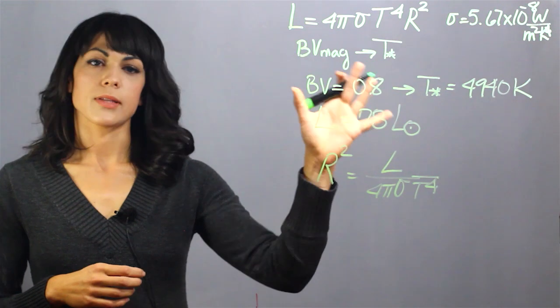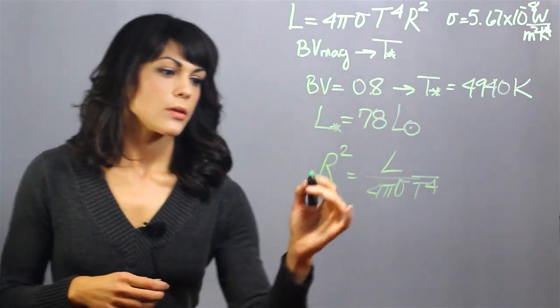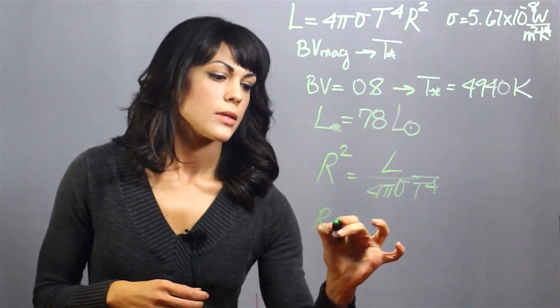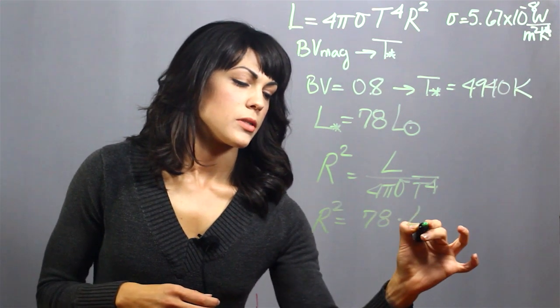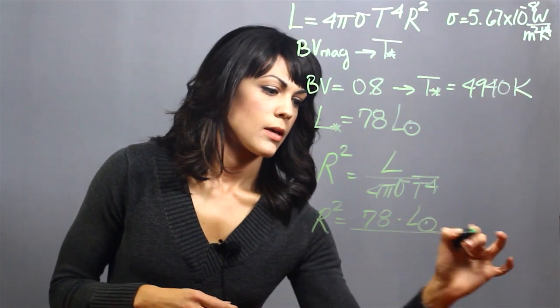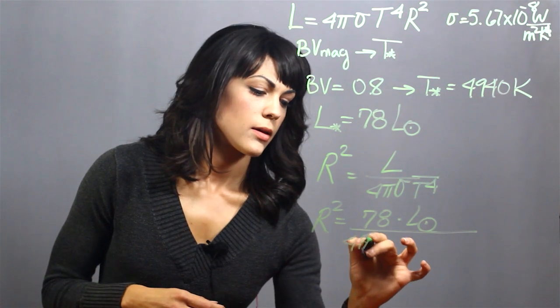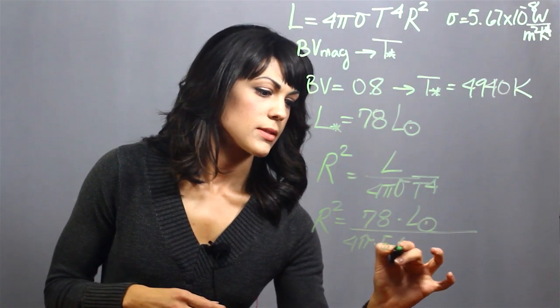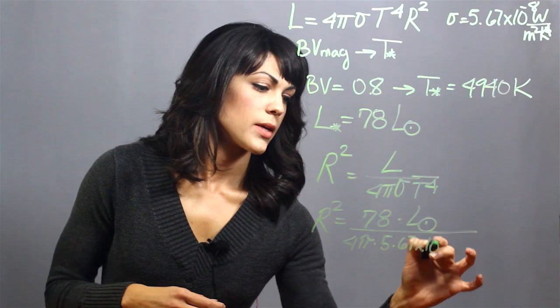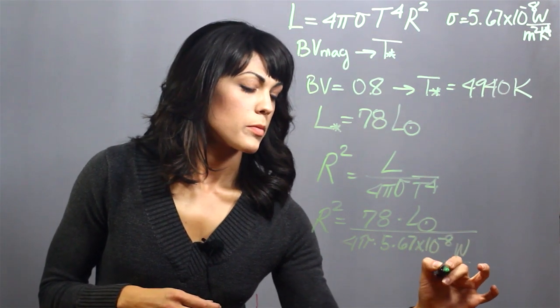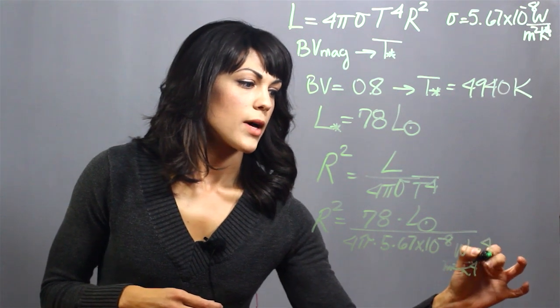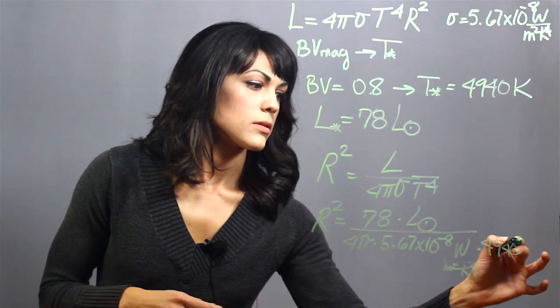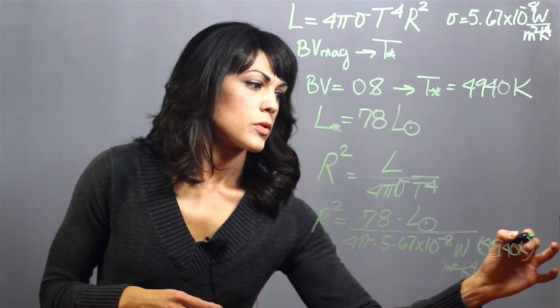Now if we plug in all the values that we have into the equation, we get that the radius squared is equal to 78 times the luminosity of the Sun divided by 4 pi times 5.67 times 10 to the minus 8 watts per meter squared kelvin to the fourth times 4940 kelvin to the fourth.